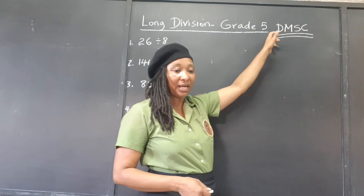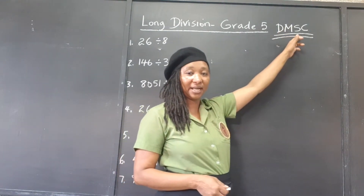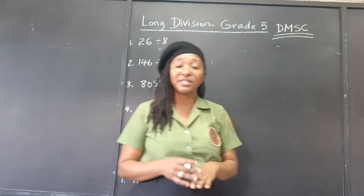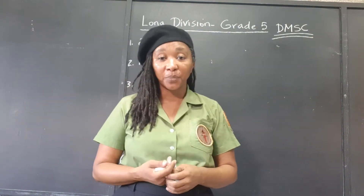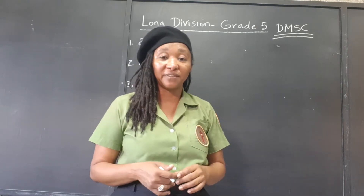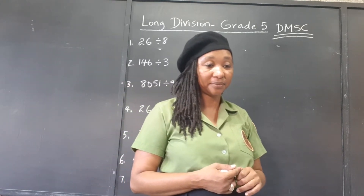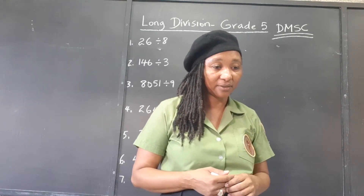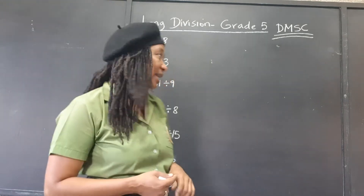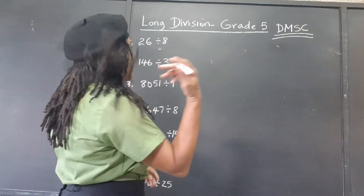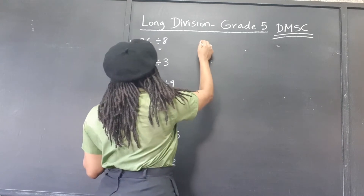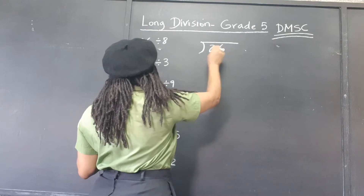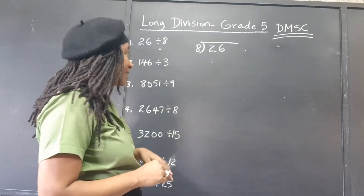M stands for Multiply, S stands for Subtract, and C stands for Carry down. Those are the four operations we're going to be doing to complete our long division. So we're going to go ahead and set out our division brackets.